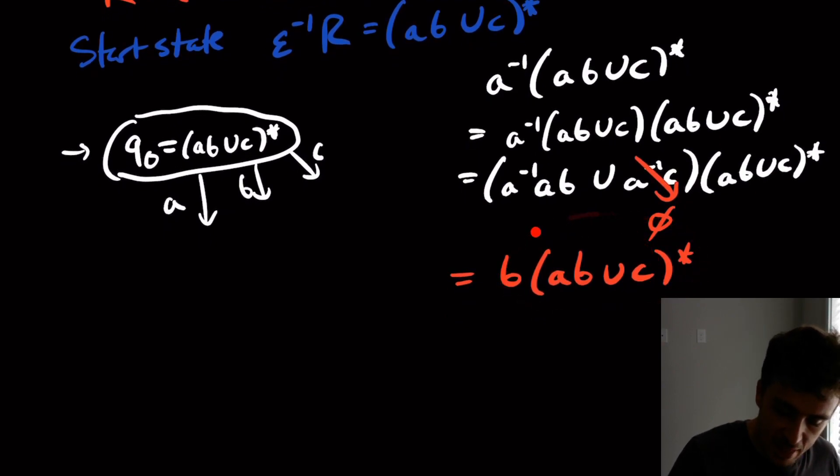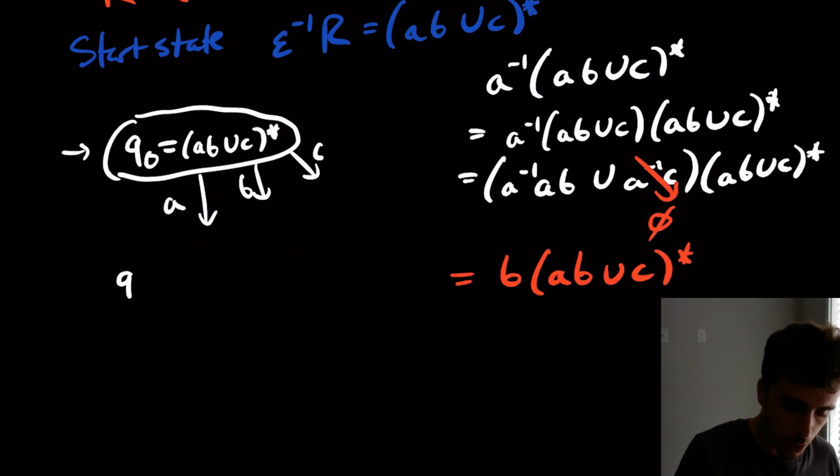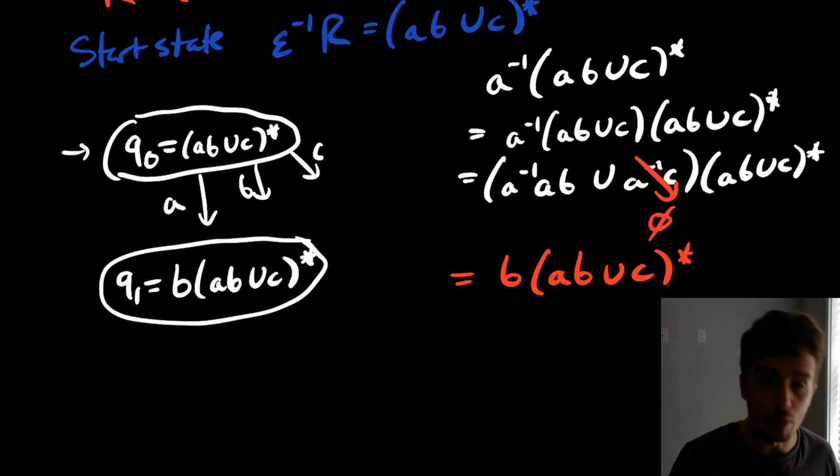We haven't seen this regex here because this is the only one that we've seen. So the state that we actually go to on input A, I'm going to call q1, which is going to be B AB union C star. So that's the state we go to on A.